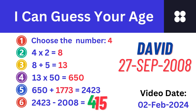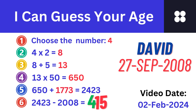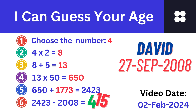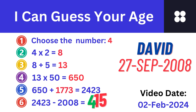The first digit 4 is the number we chose in step number 1. And the last 2 digits, 15, is David's age. David was born in 2008 and 15 is his age as of February 2024. This math trick works like a charm. If you had calculated this properly, you will get the right answer. That's pretty amazing, isn't it?